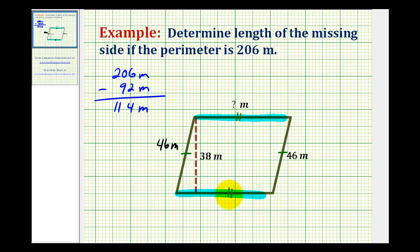But since we know they have the same length, we can take this length and divide it by two to determine the length of one of the sides. So 114 meters divided by two would be equal to 57 meters.